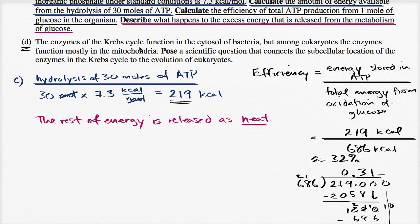Part D. The enzymes of the Krebs cycle function in the cytosol of bacteria, but among eukaryotes, the enzymes function mostly in the mitochondria. Pose a scientific question that connects the subcellular location of the enzymes in the Krebs cycle to the evolution of eukaryotes. Well, there actually is a theory that mitochondria, or the ancestors of mitochondria, might have been independent prokaryotic organisms.